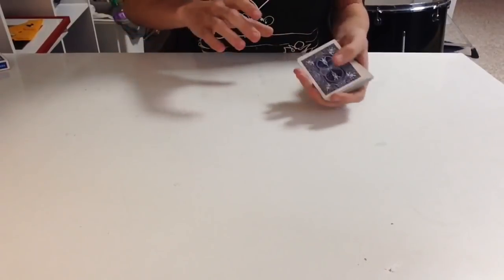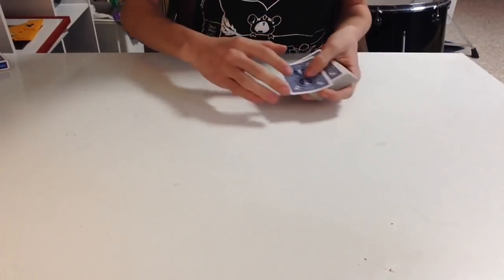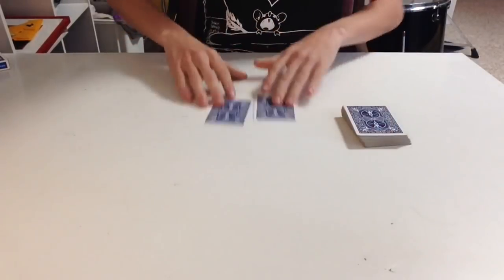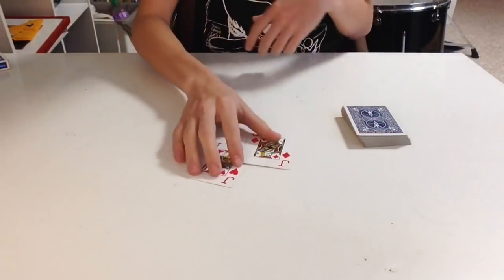Now we're going to put them right here on top of the deck. You take the two Black Queens and place them right here. What happens is they turn into the two Red Jacks.